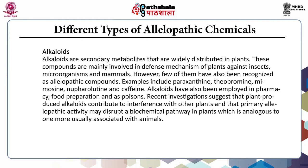The next class is alkaloids. These compounds are mainly involved in the defense mechanism of plants against insects, microorganisms and mammals. However, few have also been recognized as allelopathic compounds — for example, paraxanthine, theobromine, mimosine, nuferolutine and caffeine. They have been employed in pharmacy, food preparation and as poisons. Recent investigations suggest that plant-produced alkaloids contribute to interference with other plants, with primary allelopathic activity that may disrupt a biochemical pathway analogous to those in animals.